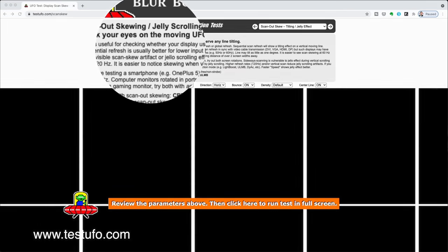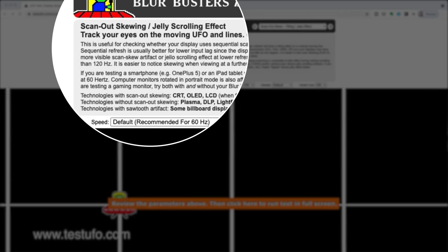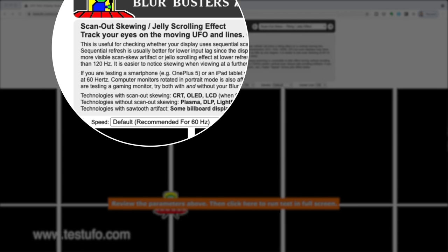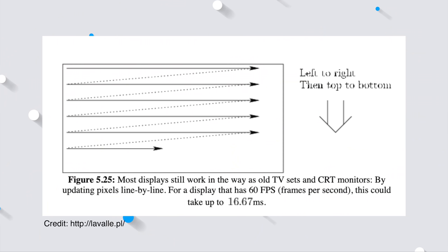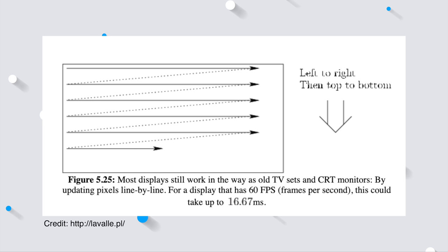A more accurate term for this wobble or jelly effect is scan-out skewing, and it's actually a quite common phenomenon in LCD screens. Basically, what happens is that LCD screens refresh line by line, typically starting at the top of the display and working its way down. So it's normal for the lines at the top to refresh at a different rate than the ones at the bottom. This usually happens so fast you don't really see it unless you really look for it.